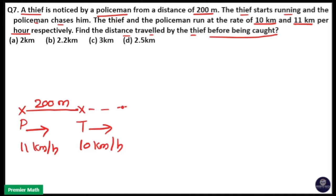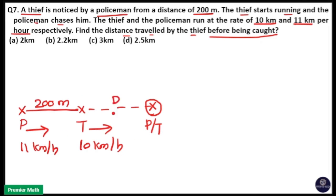So this thief will travel a distance, and at a point x — I will take this point as x — the police will catch the thief. That means the thief will travel a distance d, and the police will travel a distance d plus 200.